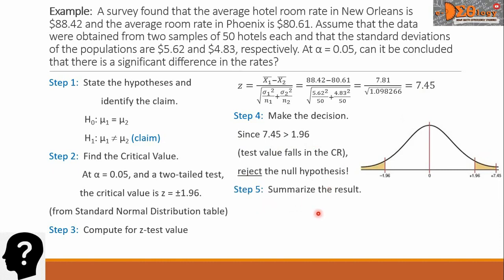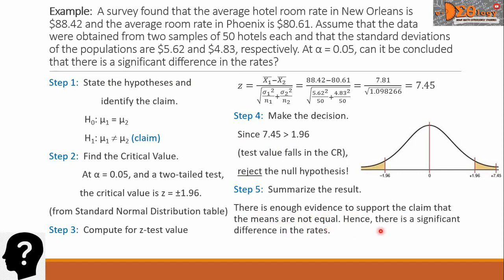For step 5, we summarize the result. We write, there is enough evidence to support the claim that the means are not equal. Hence, there is a significant difference in the rates.